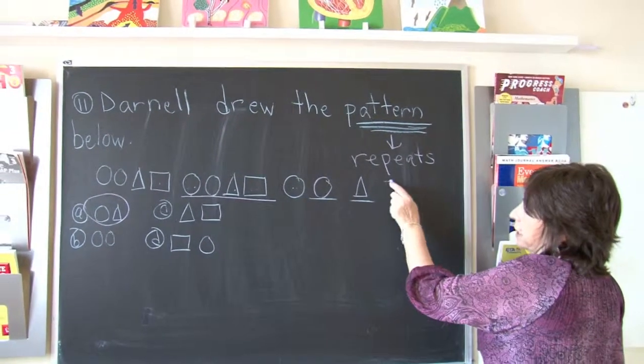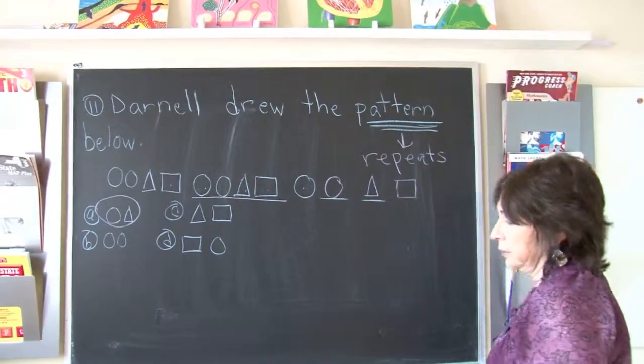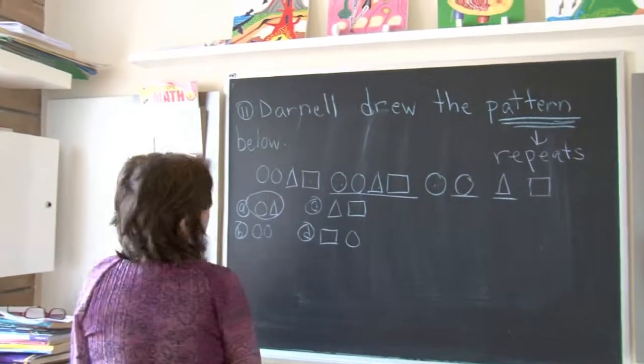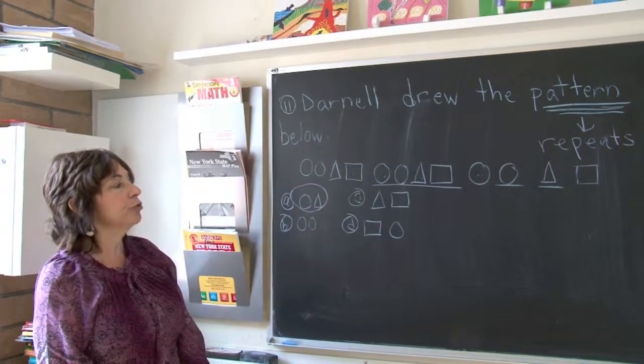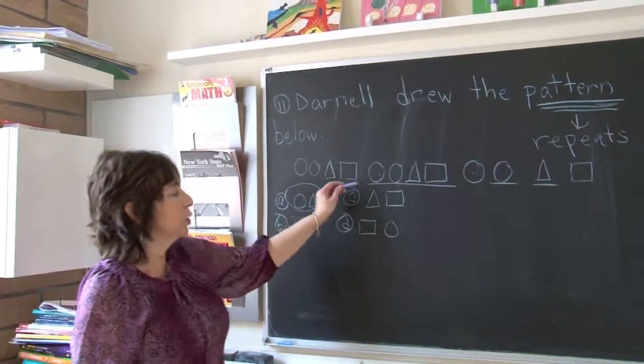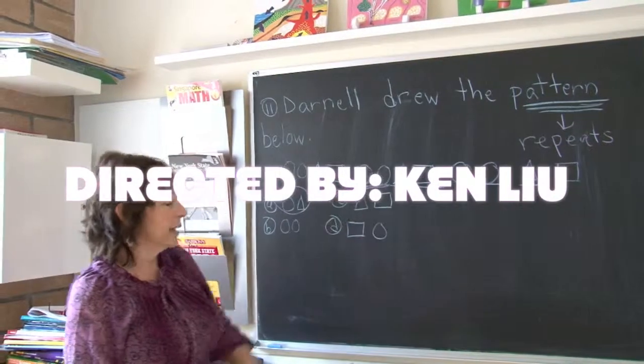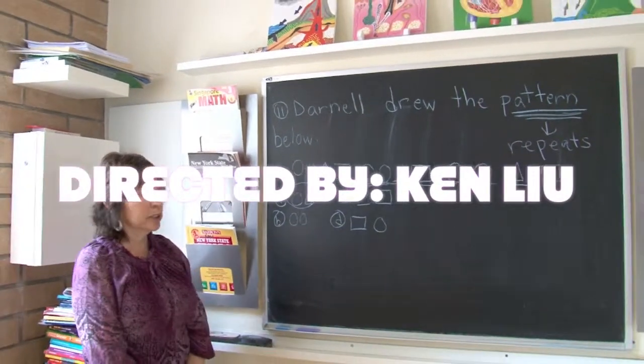And of course they didn't give us the last box, but it would have been square. And that's what we need to know that a pattern repeats itself. As soon as you see it repeating, that's how you know the pattern is beginning again.